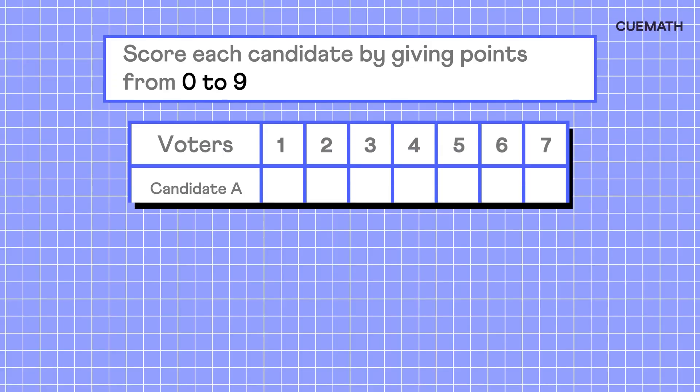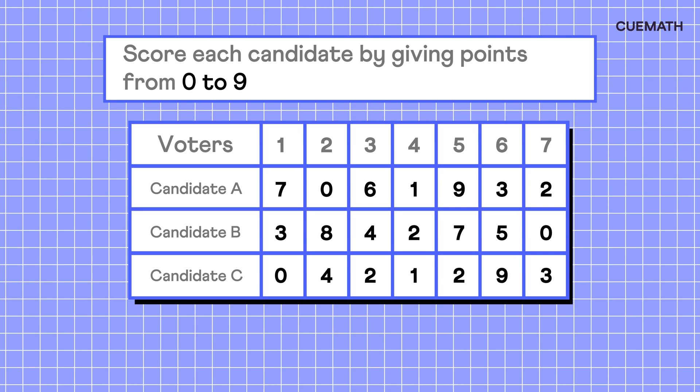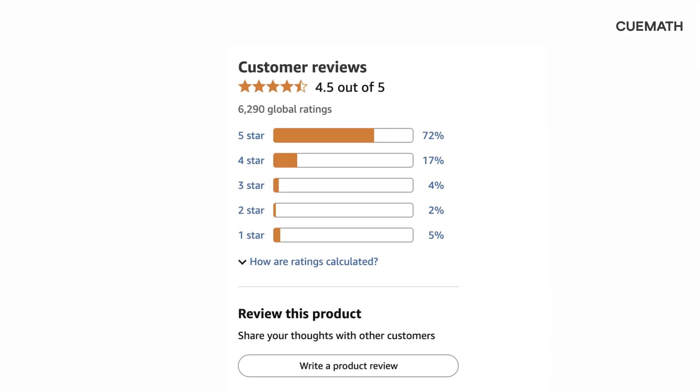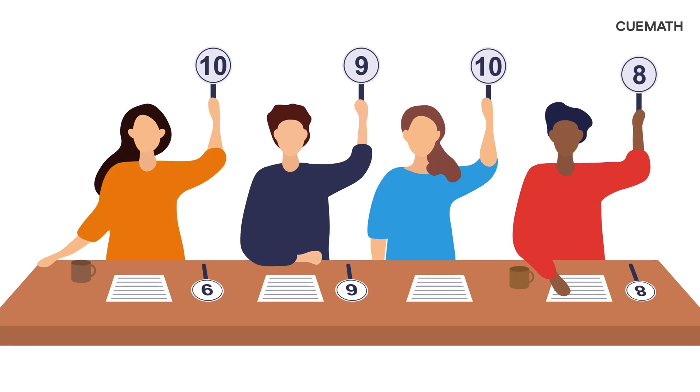New methods keep emerging, like range-based voting, where voters score each candidate and the one with the highest total wins. Variations of this method are often used to rate products online, movies on IMDB, and in judging competitions.